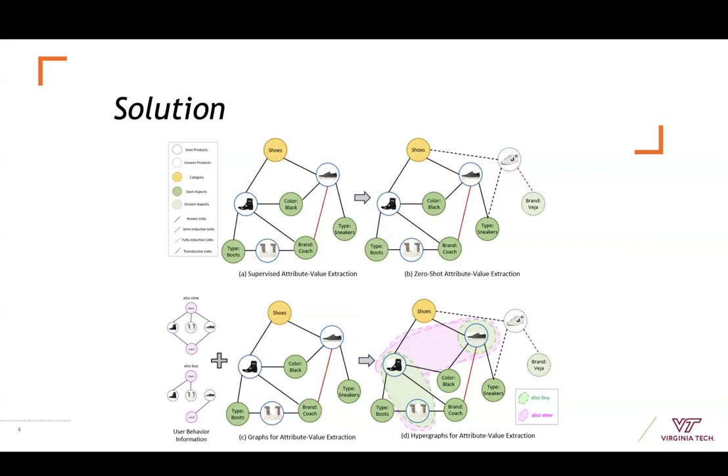First, we build inductive heterogeneous hypergraphs employing inductive link prediction mechanism to infer missing or future connections, such as from new product node to unseen aspect node.